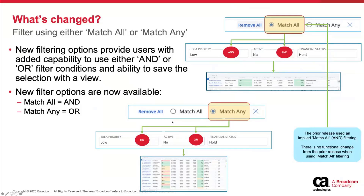From a match any perspective, this is an OR — a new capability. In this case, I want my idea priority to be low, or it's not active, or its financial status is on hold. This allows more flexibility — you can have the system look for any one of these conditions, so you're using the OR.